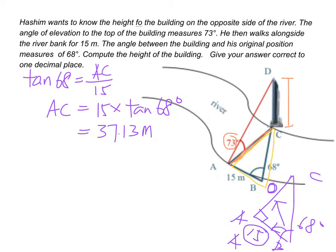We are going to look at the second triangle, this one, ADC. Now let's draw it out here. ADC, angle here is 73 degrees. And we just found out AC is 37.13, so here is 37.13.